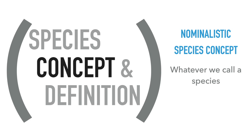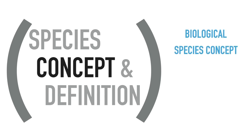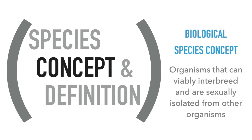Probably the most commonly used concept, however, is the biological species concept, which tells us that a species is the group of organisms that can viably interbreed and are sexually isolated from other organisms. You probably already see the problem of this concept when dealing with prokaryotes and other asexual organisms, but we'll come back to that later in the course.